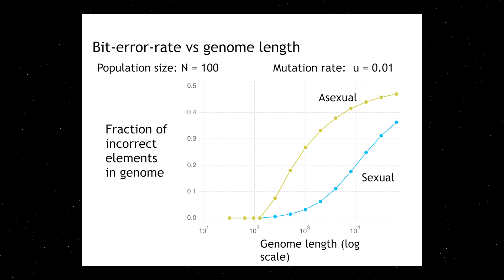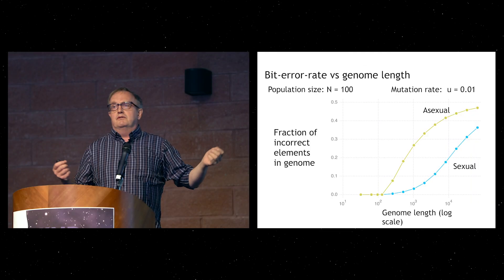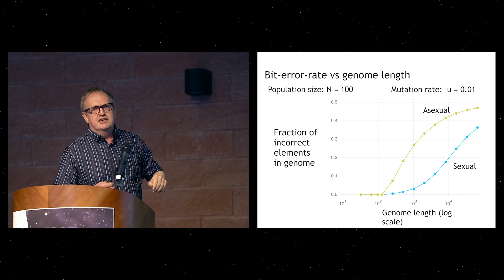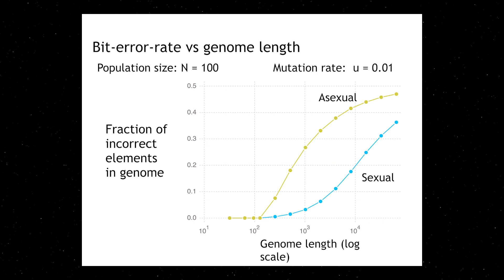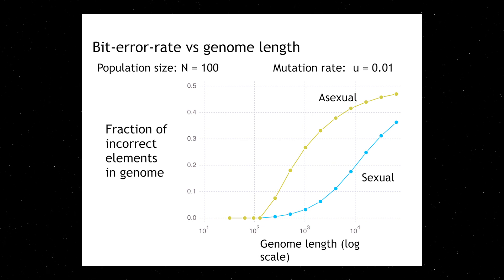We fix our per-locus mutation rate and have a population size. We plot the fraction of incorrect elements in the genome versus the length of the genome on a large scale. We notice that sexual evolution is much better at eliminating mismatches than asexual evolution for very long genomes relative to mutation rate. Up to a genome of length about 100, if one in a hundred locations mutate, we get on average one mutation per genome per generation. We can evolve to a pure population identical to the target. Since there are 2^100 possible targets, we can put in about 100 bits by selection.